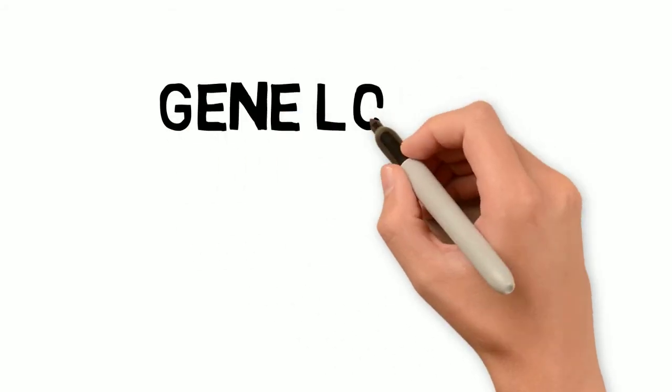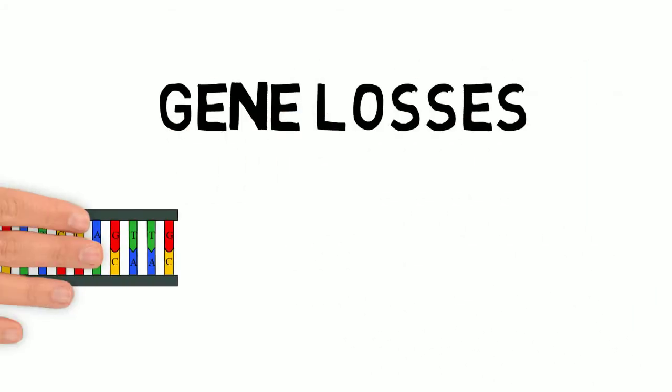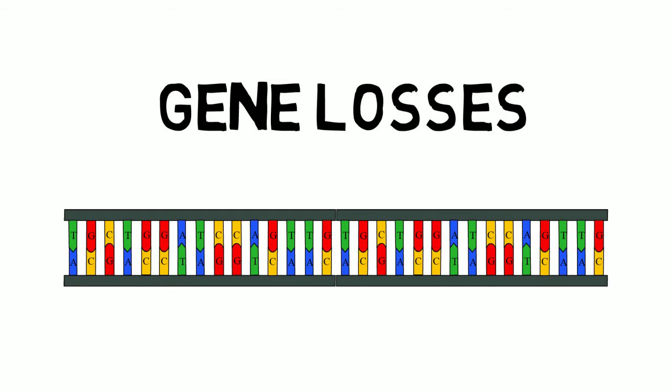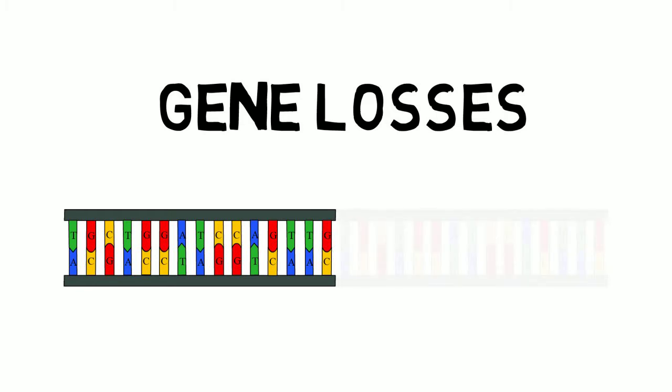Gene loss is the most common fate of a duplicated gene. When there are two functioning copies of a gene in a genome, usually one of them will be deleted after some time, unless having multiple copies is beneficial to the organism.